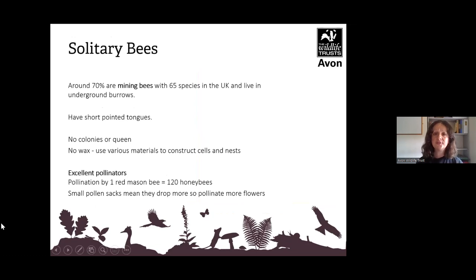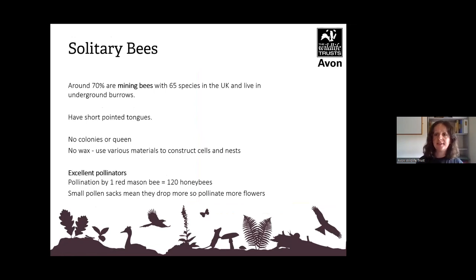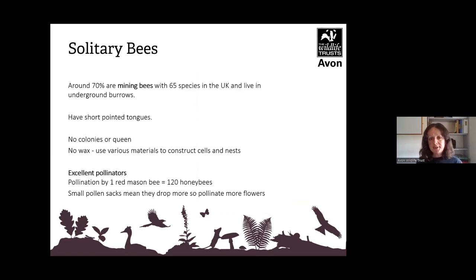Then there are the solitary bees. 70% are mining bees — there are 65 species in the UK that live in underground burrows. They have short pointed tongues, don't have any colonies or a queen, and don't use wax. They use various materials to construct their cells and nests. They are excellent pollinators — one red mason bee can pollinate as much as 120 honeybees, and their small pollen sacs mean they drop more pollen and pollinate more flowers.